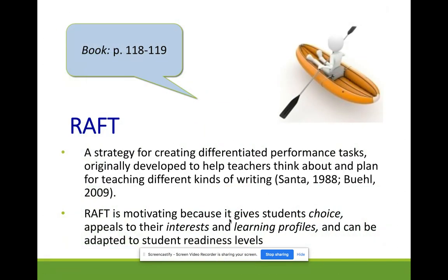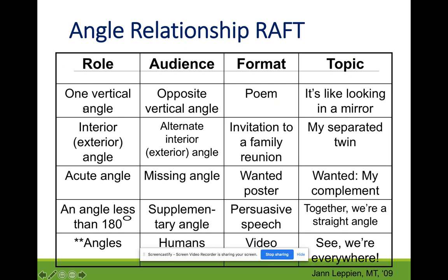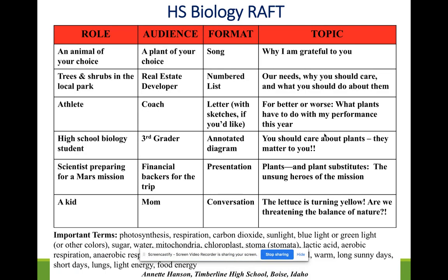The last two options: RAFT — you follow the row across. So one vertical angle speaks to an opposite vertical angle in the form of a poem — it's like looking in a mirror: 'My separated twin.' You can pause and look at that. Another version anchors students in the same learning goals with required terms they must pull from in their responses. So RAFT is really about following the role, audience, format, and topic across the row.